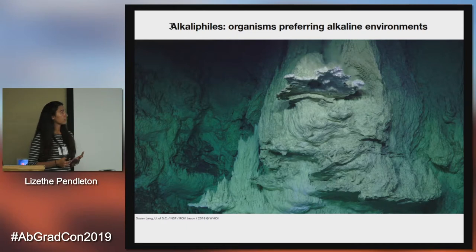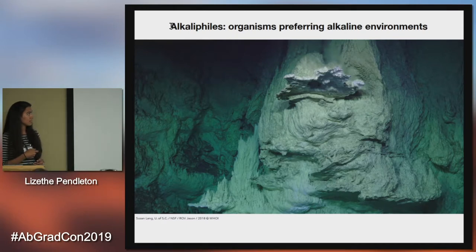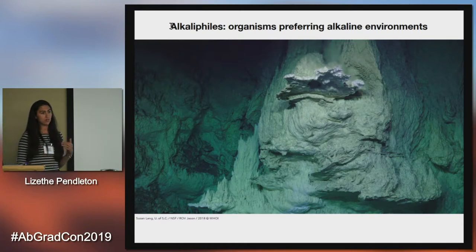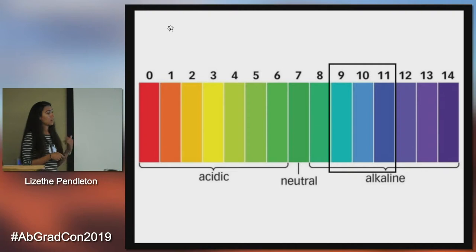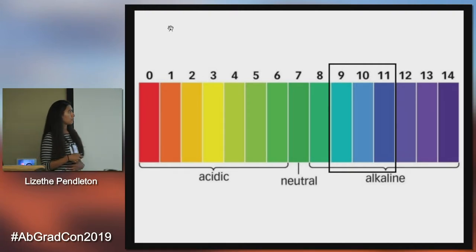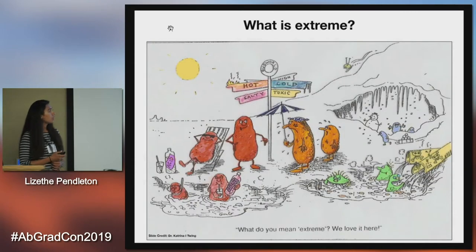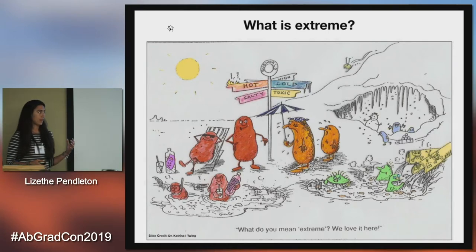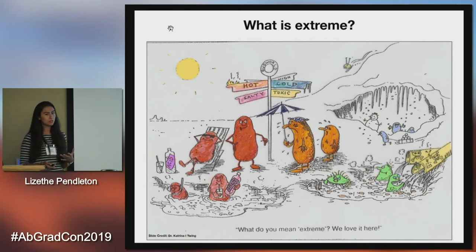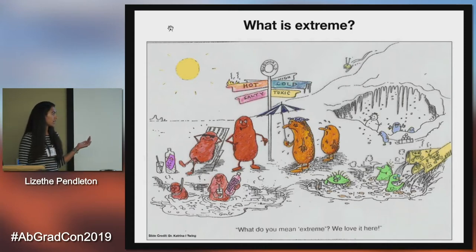Another example of an extremophile are alkaliphiles, which are organisms that prefer alkaline environments. This is an image from the Lost City cruise that the Brazelton Lab and a few others went on last fall — Dr. Brazelton showed some videos and pictures of this place at the opening ceremonies. Alkaliphiles are on the opposite end of the pH scale from acidophiles, living in environments from pH 9 to 11. There are also organisms that don't love oxygen, found in anoxic conditions, and organisms that live in low-nutrient environments. While these environments are extreme to us, these organisms are completely happy here — this is their happy place, what they were made for.